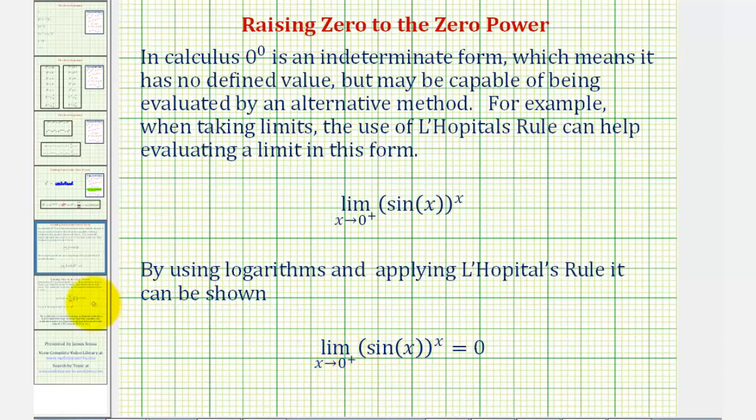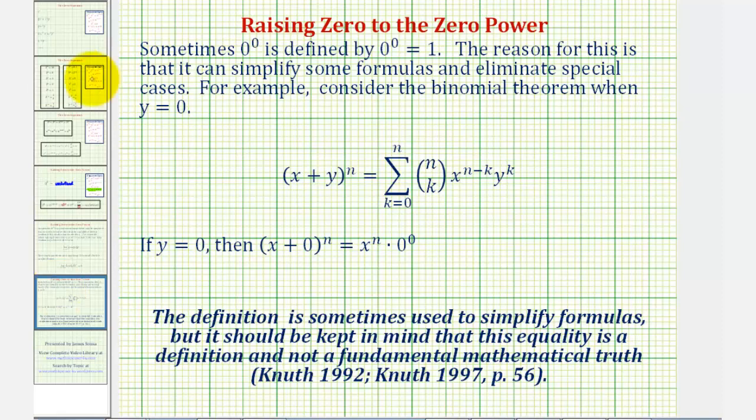And then through further research, I found that sometimes zero to the power of zero is defined as being equal to positive one. And the reason for this is that it can simplify some formulas and eliminate special cases. For example, if we consider the binomial theorem,